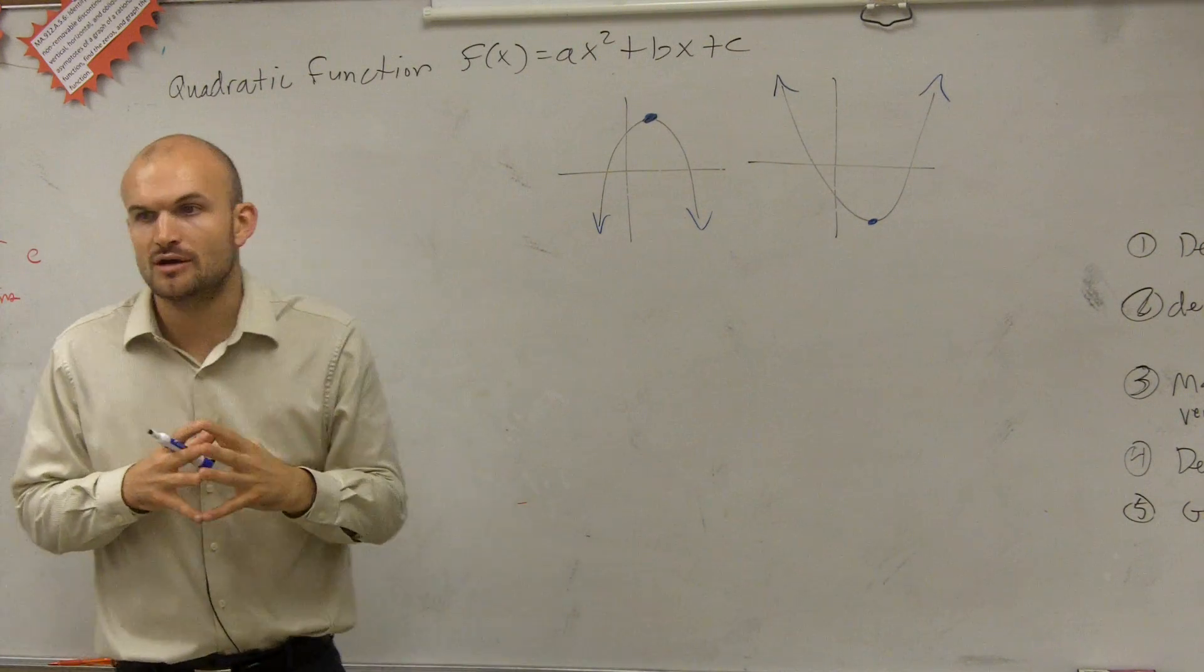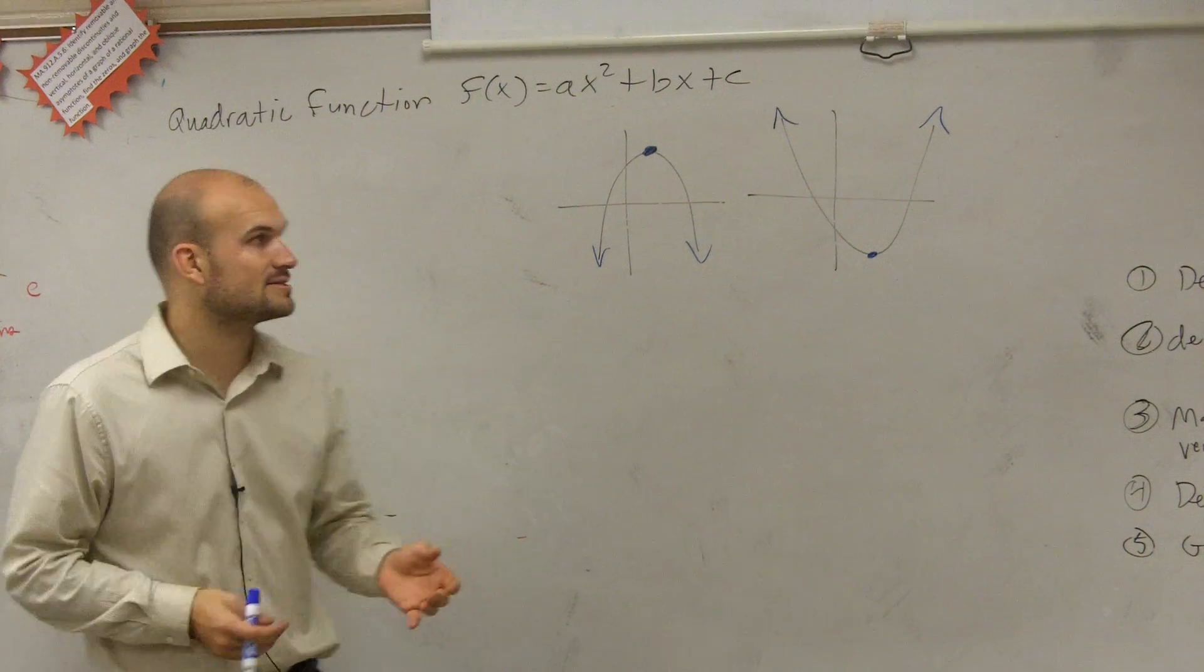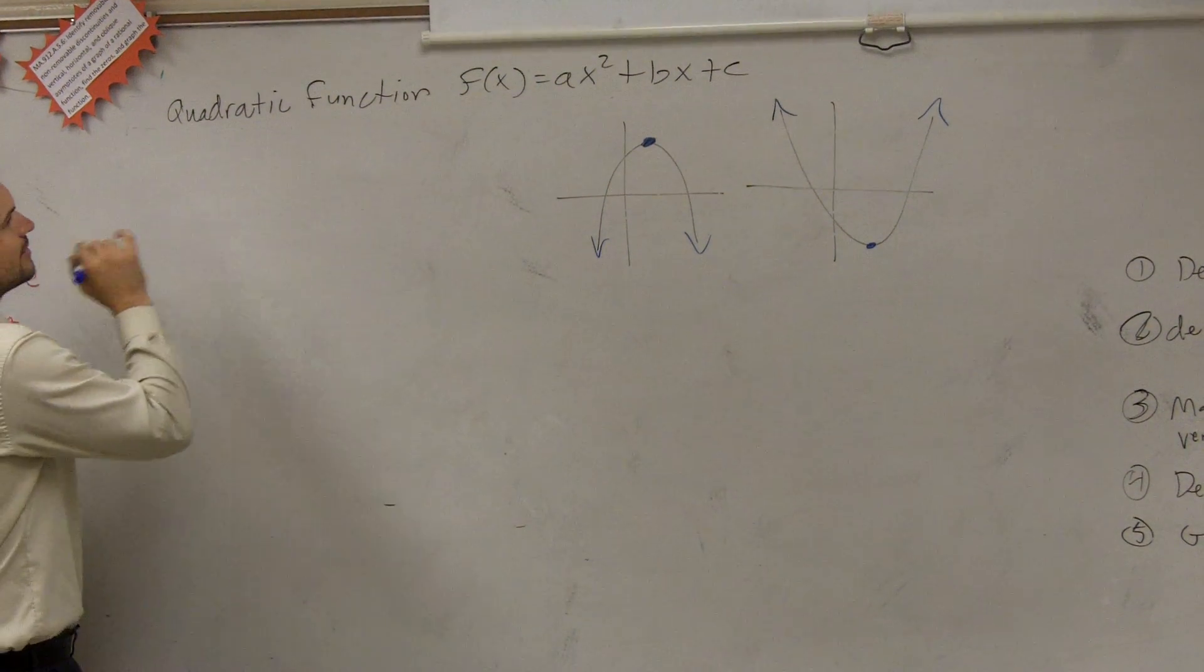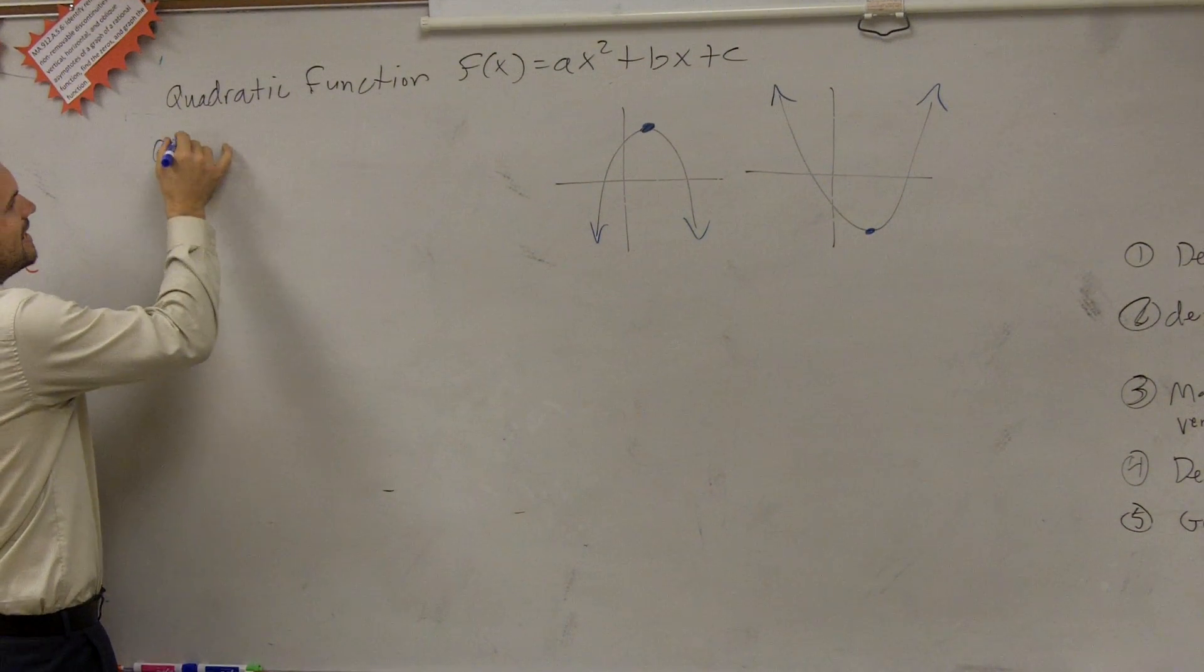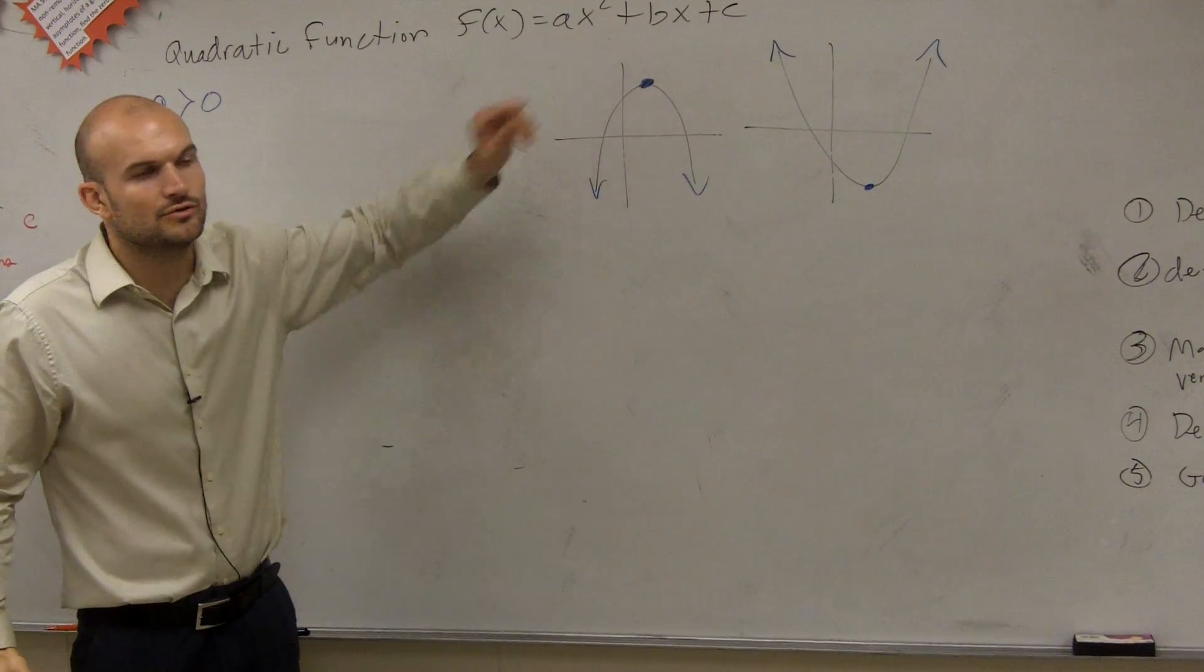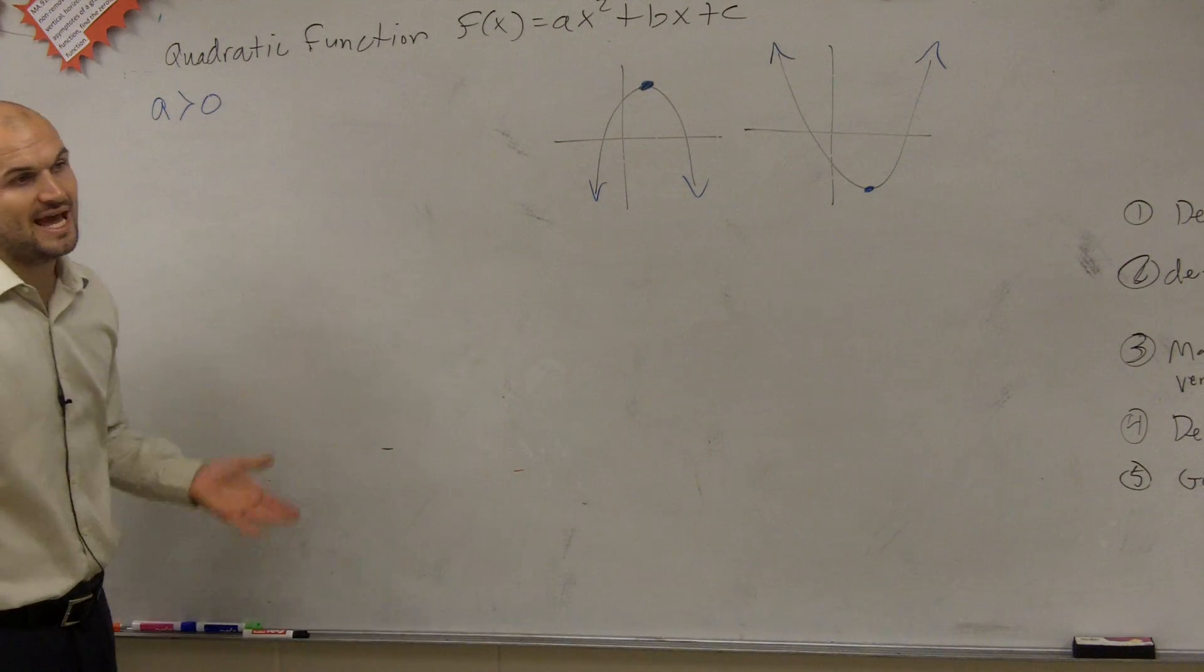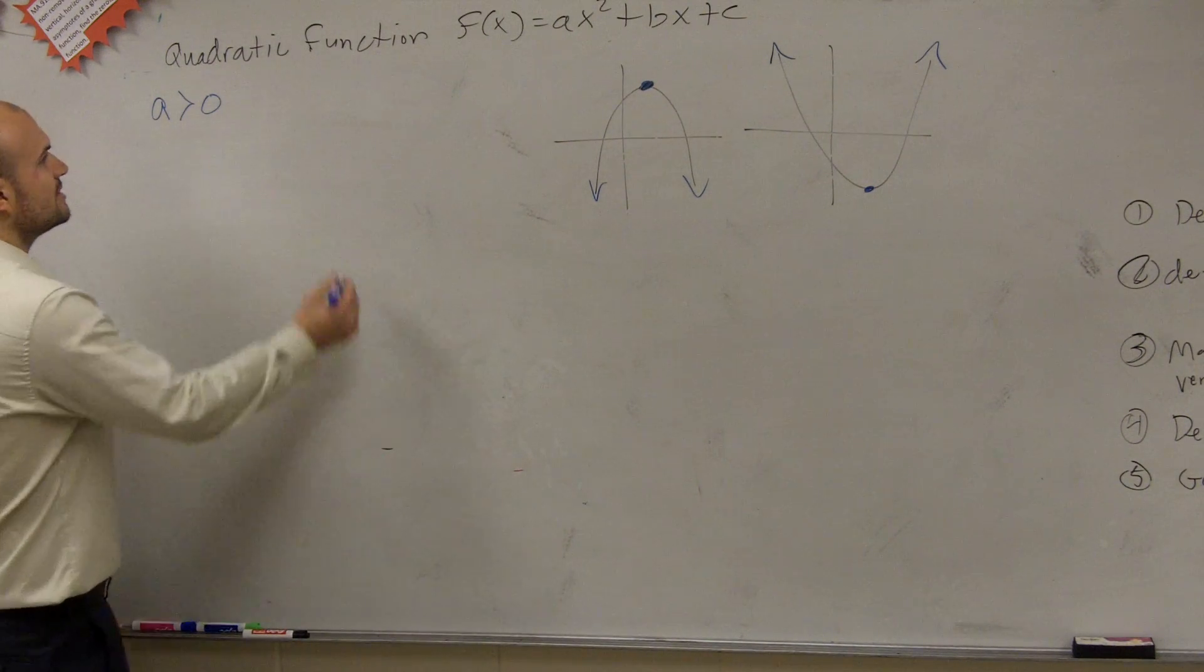So how do we determine, just algebraically, if our graph is going to be maximum minimum without graphing it? Well, here's our rule. If a is greater than 0, so when you take your quadratic and you look at the coefficient of your quadratic term, which is going to be a, when a is greater than 0...